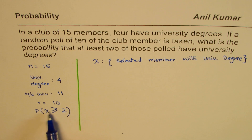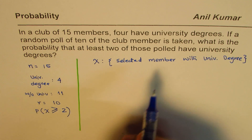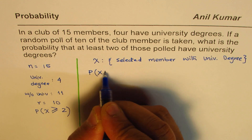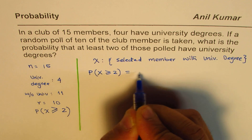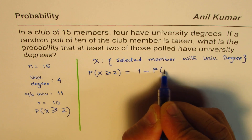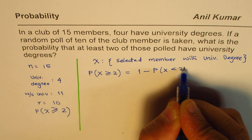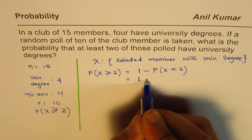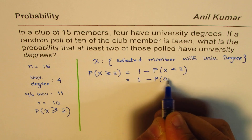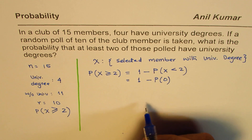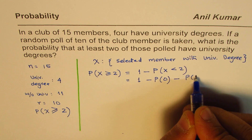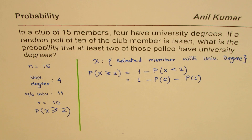Now when we say the probability is greater than or equal to two, since total probability is one, we can write: P(X ≥ 2) = 1 − P(X < 2). That makes things simpler for us, which equals one minus the probability when none of them has a university degree, or the second case when X equals one — when exactly one has a university degree.